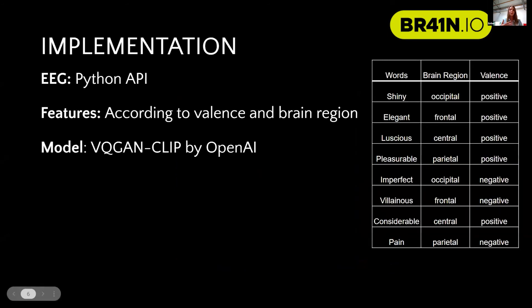Then our implementation — so how did we get there? We extracted EEG data, and to process that we used a Python API. Then we extracted the power spectral density for every channel to get values that we could normalize and extract features from, creating our dataset. The dataset is shown on the right side of the screen — it would pick words according to the emotional valence and the brain region where we detected activity. Those words would then be fed into the model that would create the paintings. That's how we turned the EEG waves, the brain activity, into actual paintings.